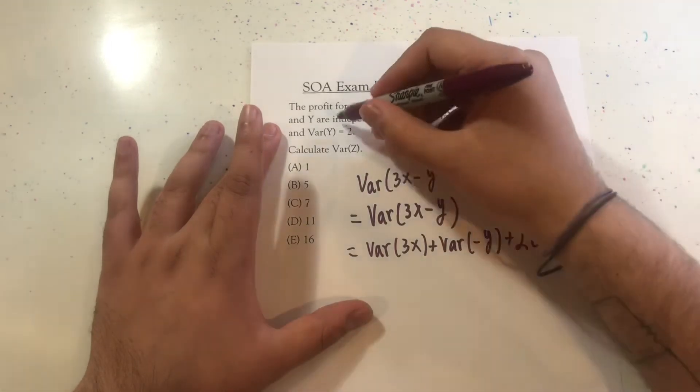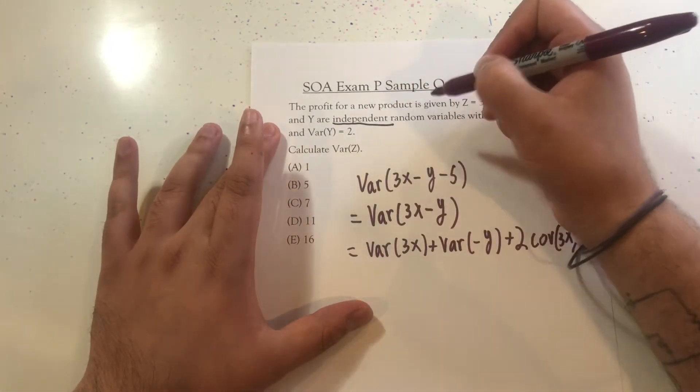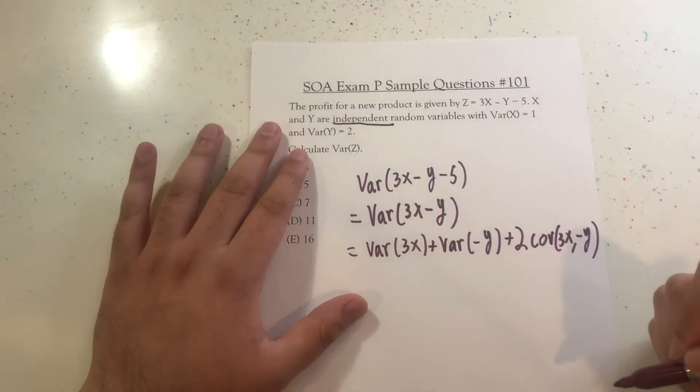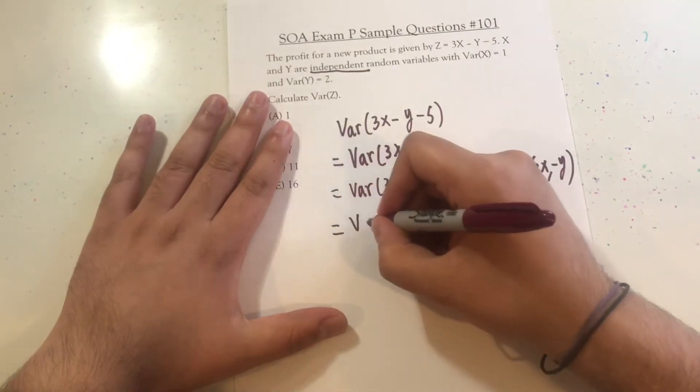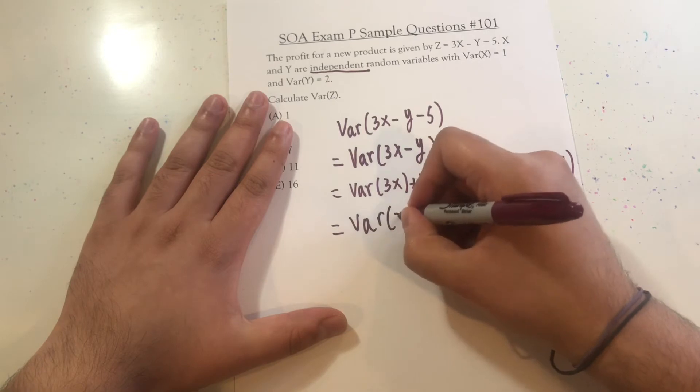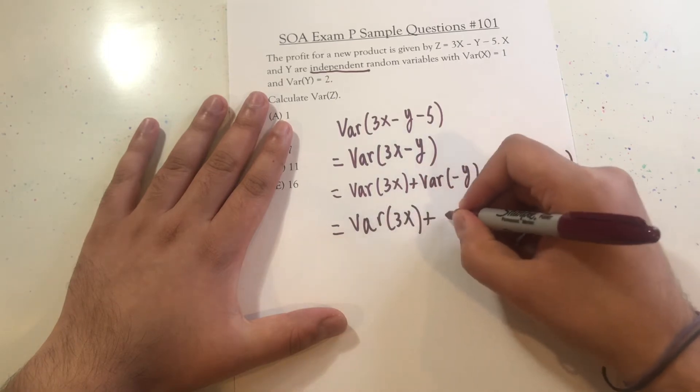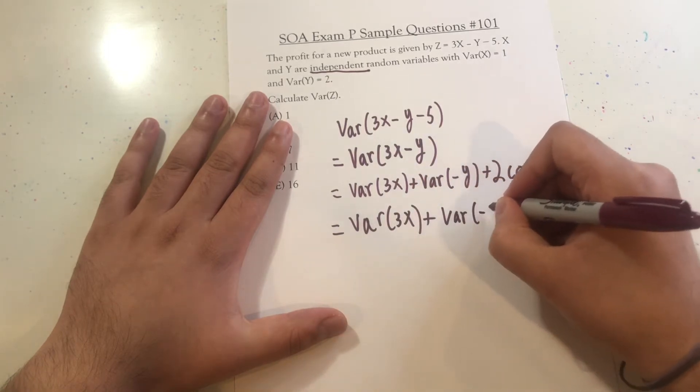When two random variables are independent, we know their covariance to be zero. So, this is essentially just zero, or we're left with, variance of 3X plus variance of negative Y.